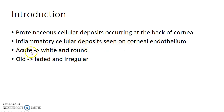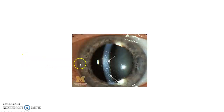Acute keratic precipitates are white and brown, whereas old keratic precipitates appear faded and they are irregular. This is how a patient with keratic precipitates presents to you.